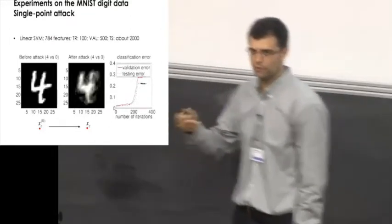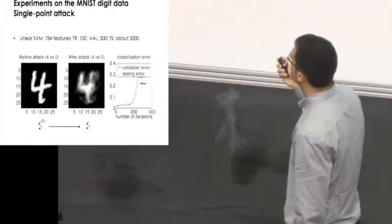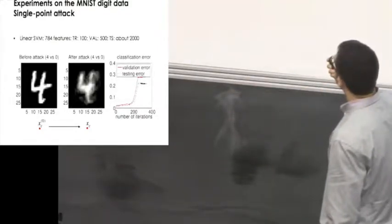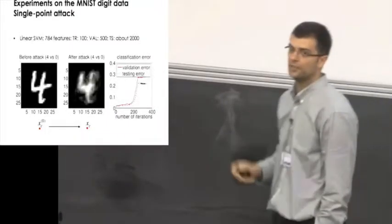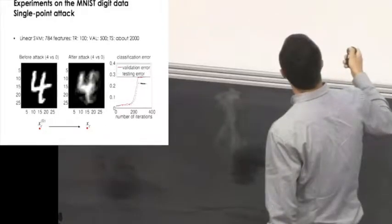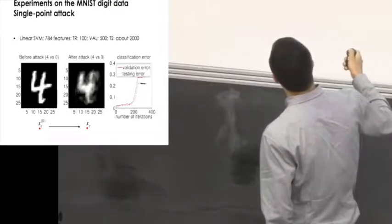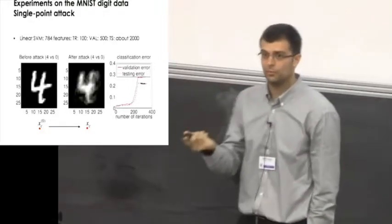What we do is to initialize the attack point to be a point in the attacked class, so we just do kind of label flip in the attacked class. Let's assume that this image of four is labeled as zero. We run the attack then. You can notice that the effect on the final attack point, we can notice this blurring effect on the digit that somewhat tries to resemble the zero class over here, if you can appreciate that. What is most interesting to note is that the classification error, in particular the testing error, raises from almost a perfect classifier up to 20%, just using a single point, just adding a single point to the training data.